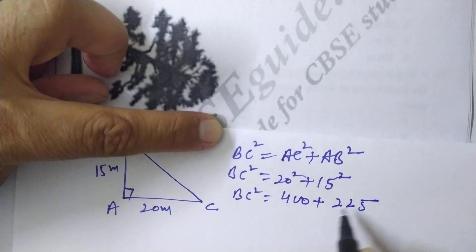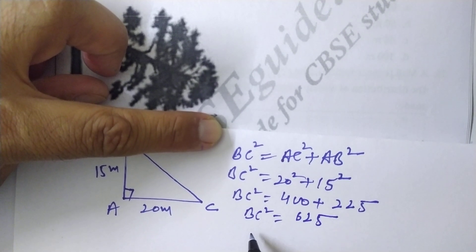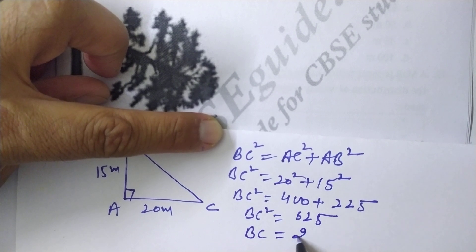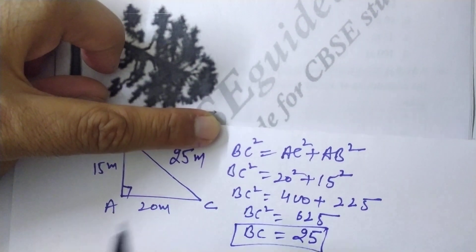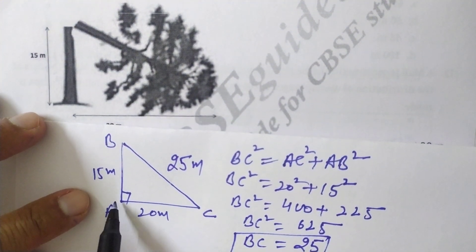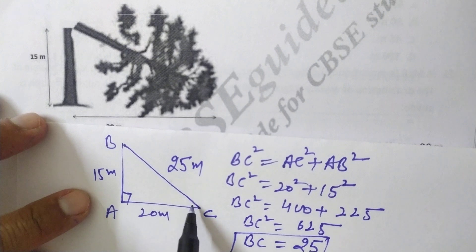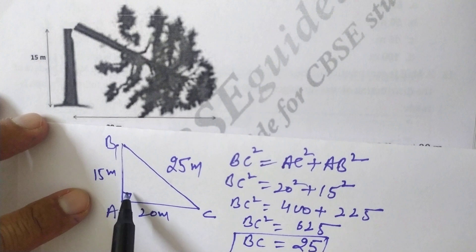BC² = 400 + 225, so BC² = 625. Whose square is 625? That is 25, so BC is 25 meters. From here you can see that total height of the tree was 15 + 25, so 40 meters is the total height of the tree.